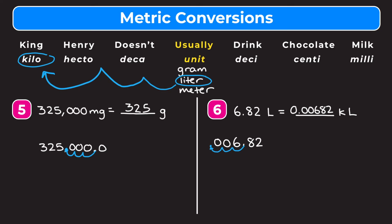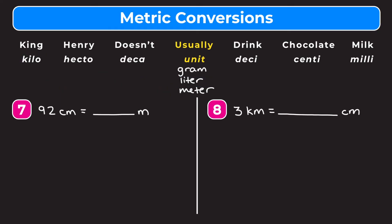Let's go through two more examples to make sure we really understand this. I encourage you to pause the video and try them on your own, then watch me work through them to check your answer. Example seven: convert 92 centimeters to meters. Going from centi to our unit of meters, we need to move two places to the left. Rewriting 92 as 92.0 and moving two places to the left, we get that 92 centimeters is equal to 0.92 meters.